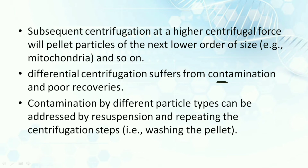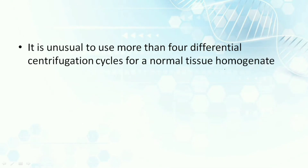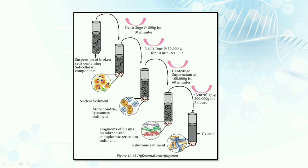Differential centrifugation has one disadvantage: contamination is a bit more, and there also occur poor recoveries. Contamination by different particle types can be addressed by resuspension and repeating the centrifugation steps - that is, by washing the pellet again and again. It is unusual to see more than four different centrifugation cycles for a normal tissue homogenate.